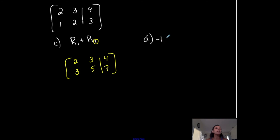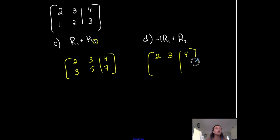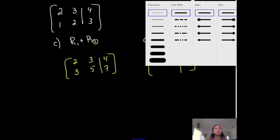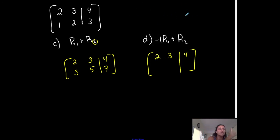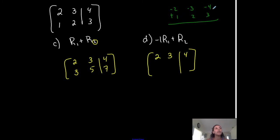Let's do negative one times R1 plus R2. This is telling me to take row one, multiply it by negative one, and then add it to row two. Those new elements go into row two. This is not telling me to change row one — row one is staying the same. Sometimes students write the operation out on the side. Negative one times row one is negative two, negative three, and negative four. Row two is one, two, and three. Adding the two together: negative two plus one is negative one, negative three plus two is negative one, negative four plus three is negative one. This is my new matrix after this particular operation.